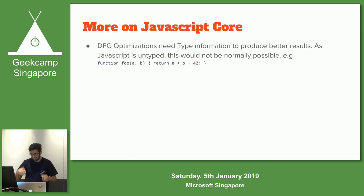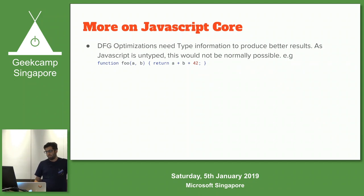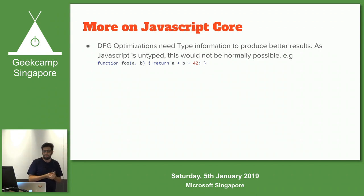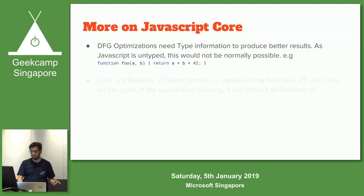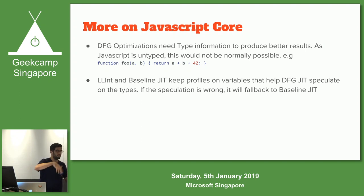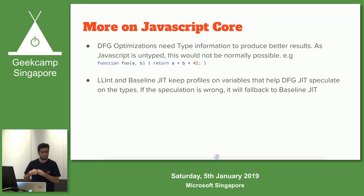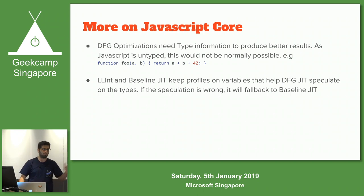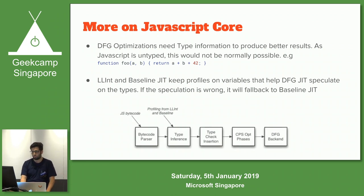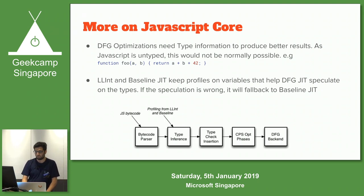Some more things about JavaScript Core. JavaScript is an untyped language, so you need type information to compile efficient code. If I have a function foo with a plus b, what are a and b? It's JavaScript - could be a string, empty array, empty object. So how does the DFG JIT know what type it is? The low-level interpreter and baseline JIT already ran the function many times, so they keep profiles on variables and store what type they are. If the speculation is wrong, they fall back to baseline JIT. If it's right, they use the optimized version.